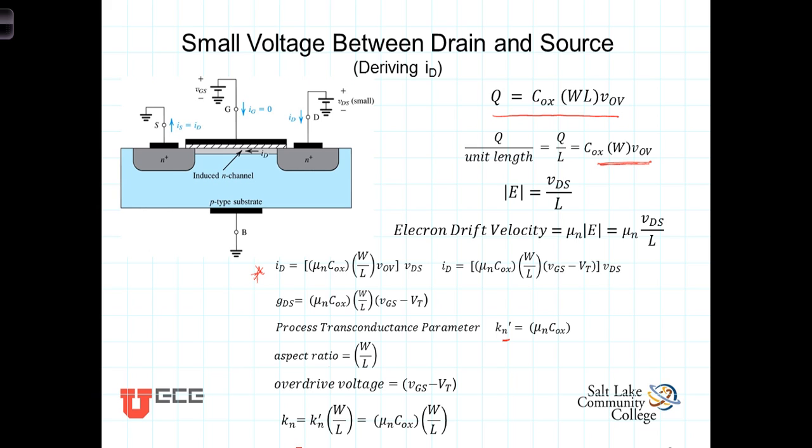Finally, we define one more term called K sub n, which is just this process transconductance parameter times the aspect ratio, which is mu sub n COx times the aspect ratio. And you'll notice that this K sub n term is a constant that consists of the physical parameters of the transistor itself. Thus, we can write an expression for the current I sub D, which is equal to this transconductance G sub dS times V sub dS.